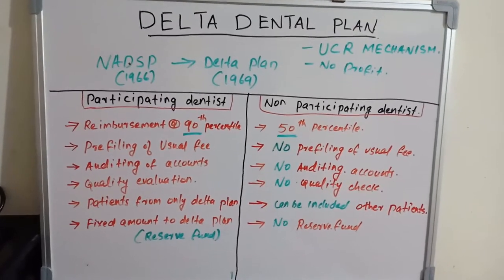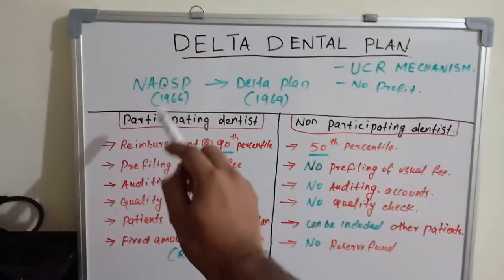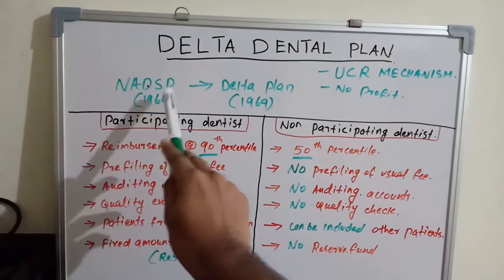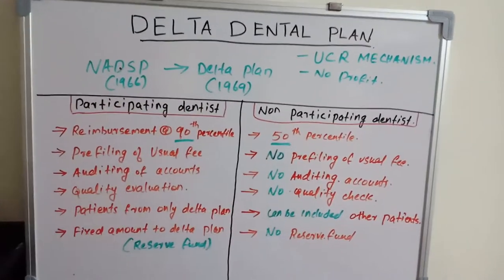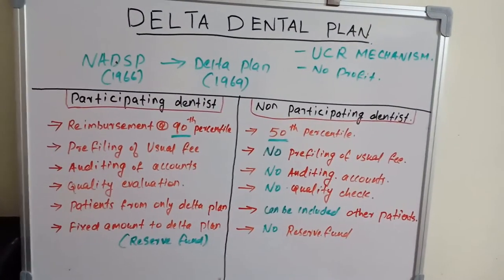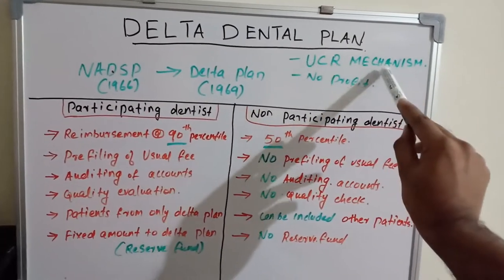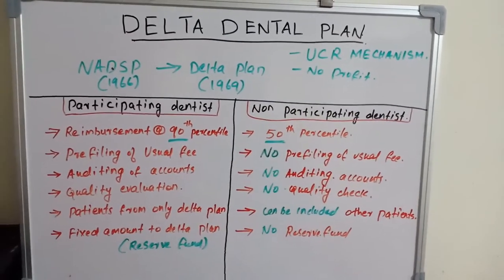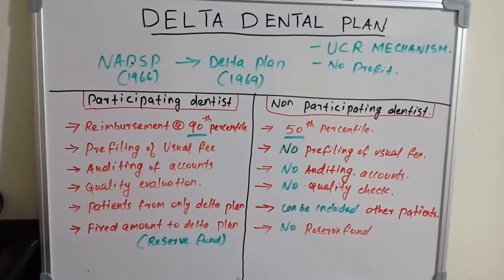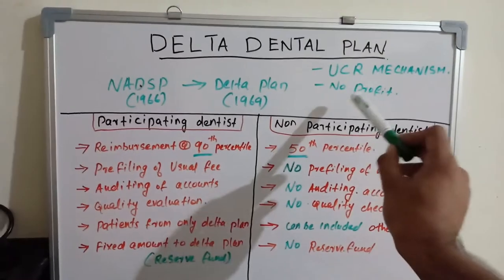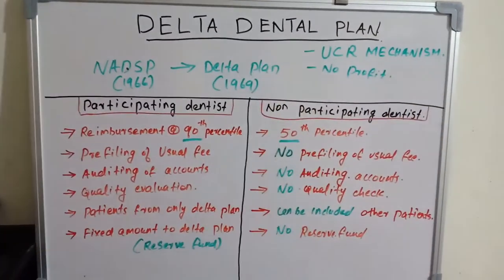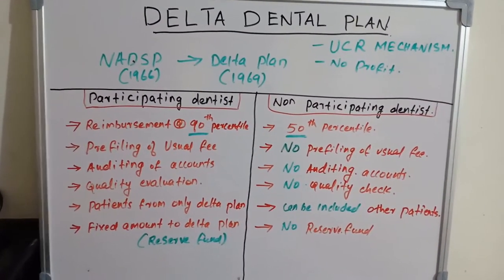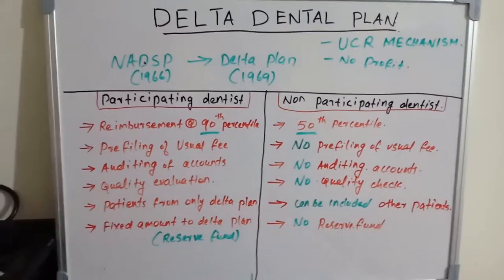The Delta Dental plan was started as NADSP in 1969, and its name later changed to Delta plan. It follows the UCR mechanism of percentile calculation, which we have already seen how to calculate. There is no profit — this is a non-profit association, along with Blue Cross and Blue Shield.